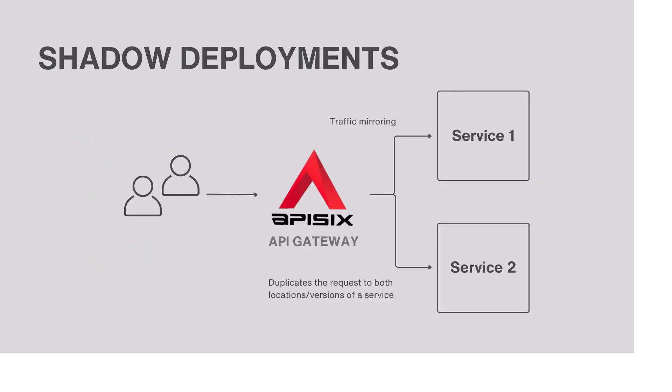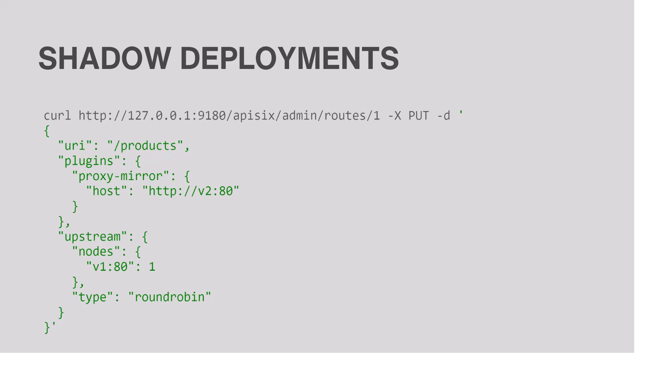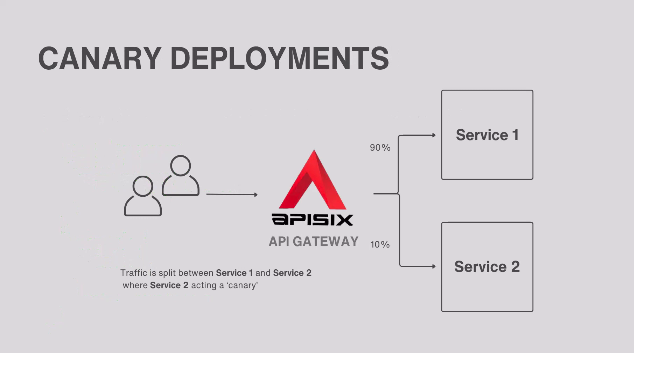Shadow deployment is a great strategy to test new APIs with production traffic. This type of deployment is carried out by mirroring — sending a copy of production traffic to the new API and ignoring its responses for now. This lets you test application errors and performance by examining logs and metrics with production traffic, without really deploying your new API to production. APISIX has a proxy mirror plugin that mirrors traffic to another service, and the example shows how to configure this plugin on a specific route.